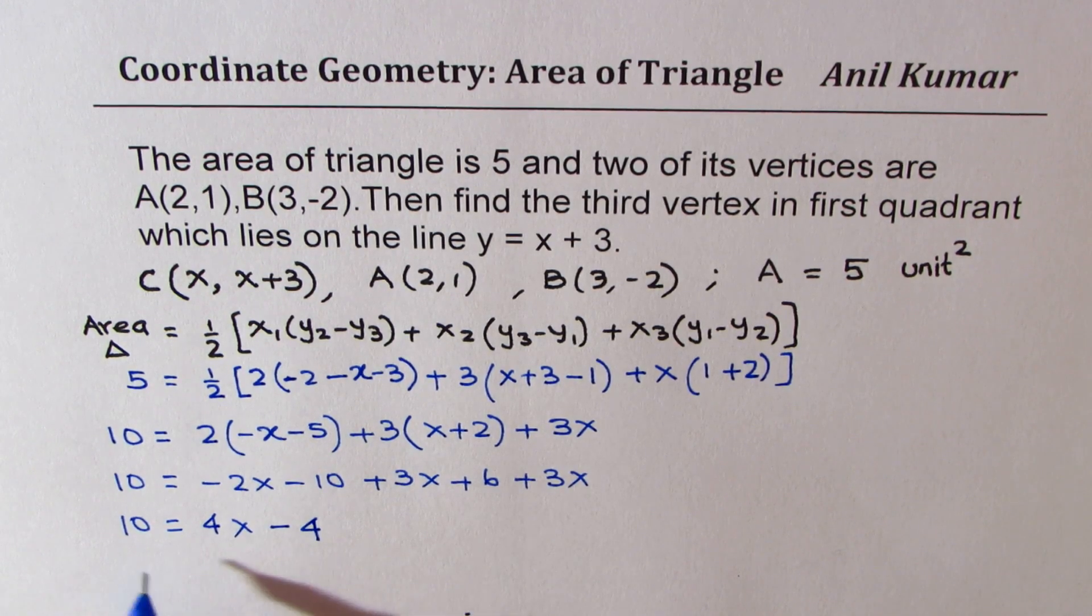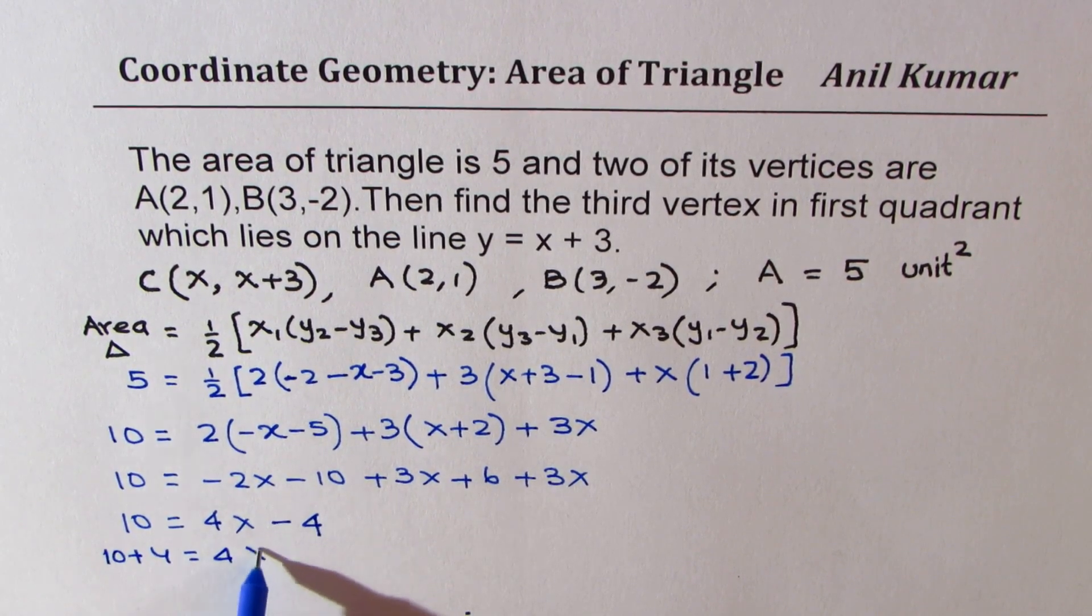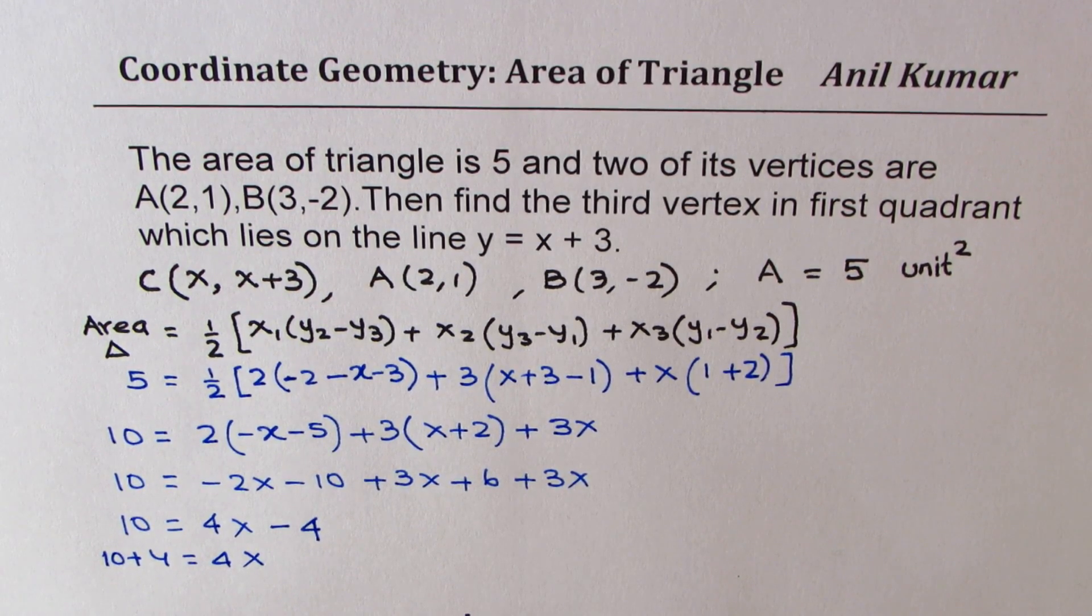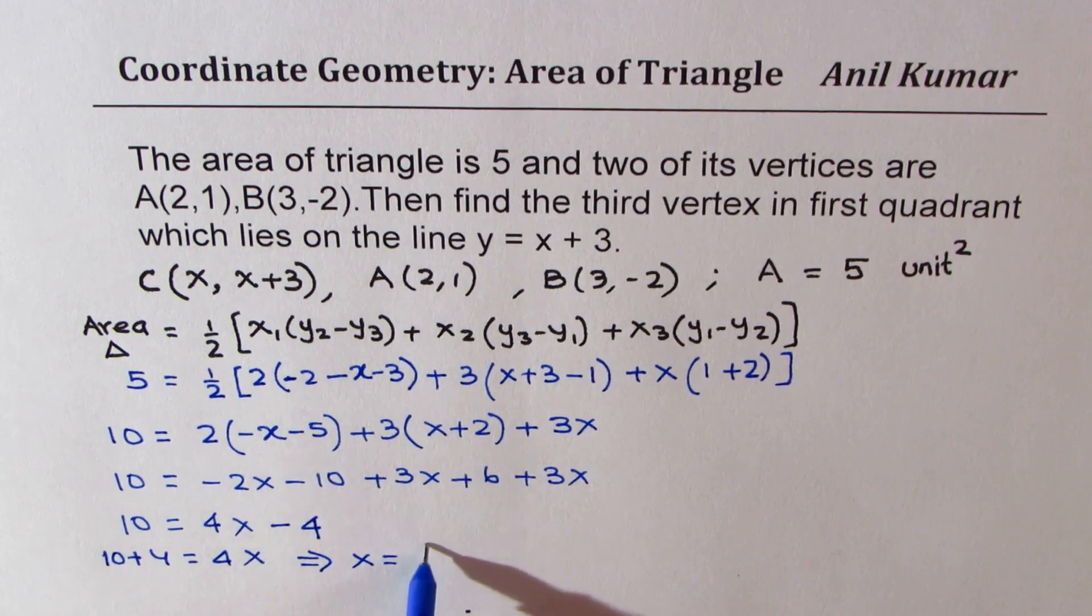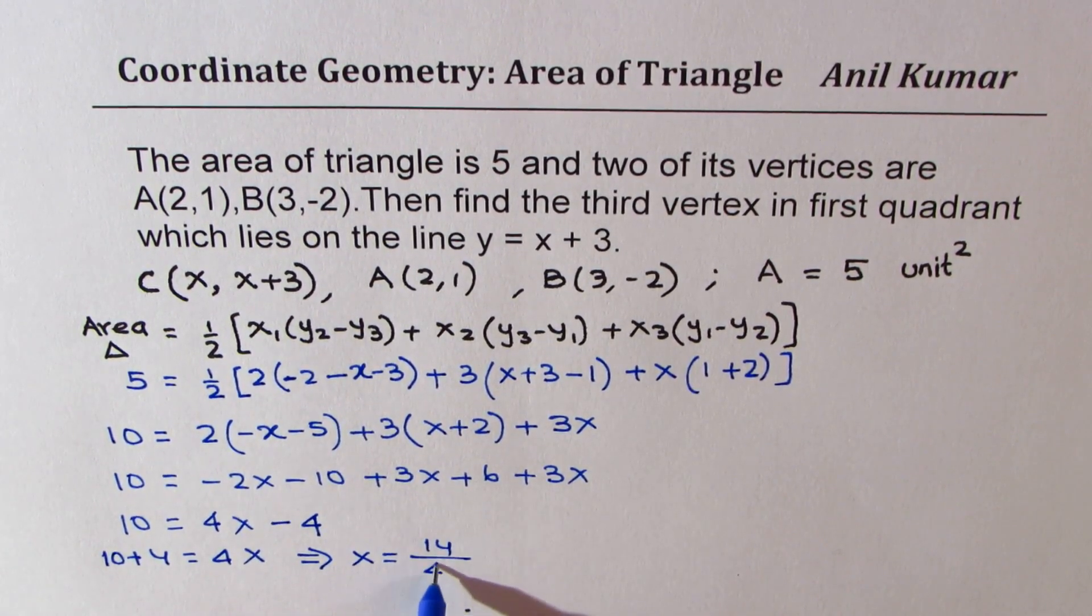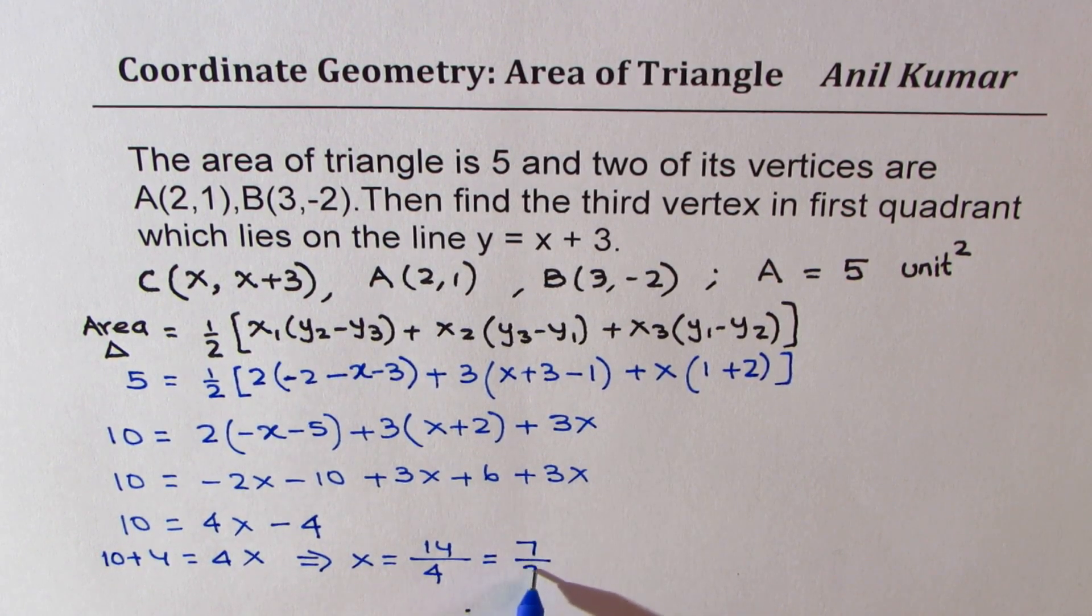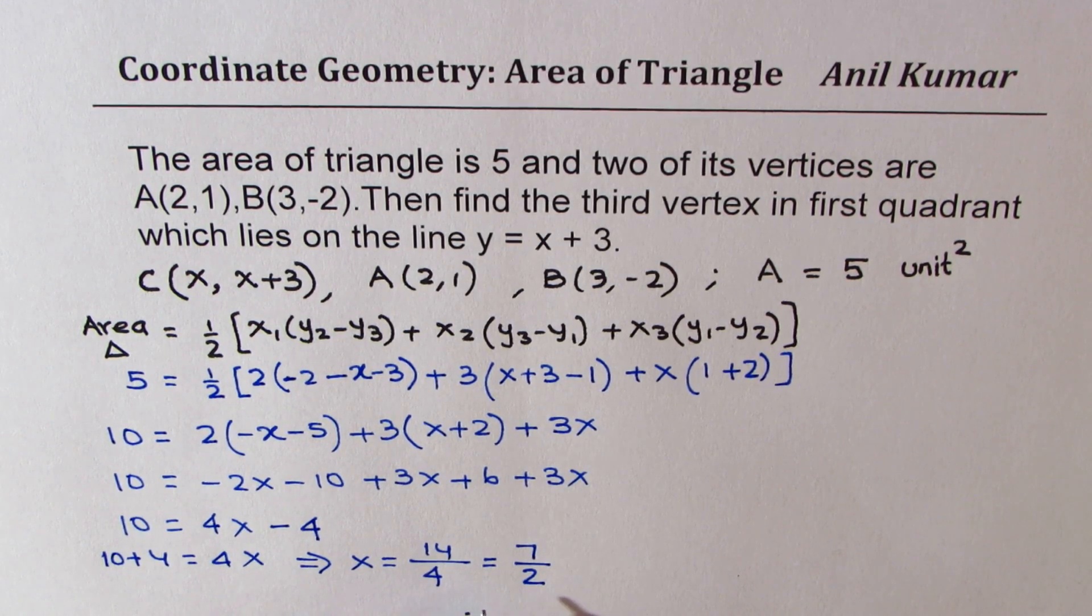Now taking them together we get 10 + 4 = 4x, and that gives you the x value as 14/4. So from here we get x = 14/4 or you could write 7/2. So that becomes the x value for the given condition.